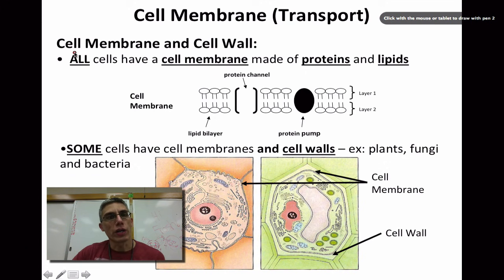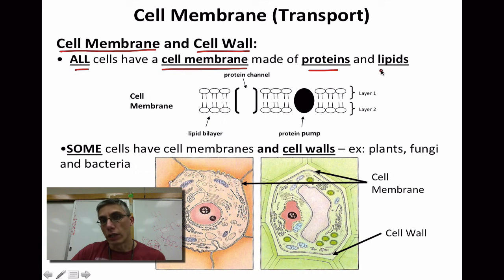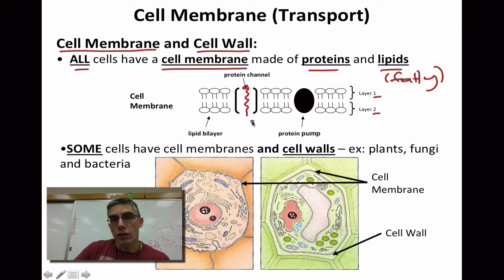Taking a look at this first slide, we have some information to review important parts of the cell membrane. All cells have a cell membrane made of two parts: a protein layer and a lipid or fatty layer. That fatty layer is actually made up of two individual fatty layers — a lipid bilayer. Embedded within those layers are proteins that form a channel, allowing larger molecules inside the cell. These channels can open or close, helping determine what goes in and out of the cell.